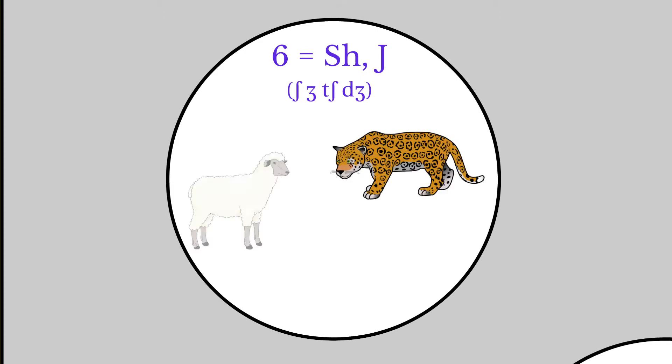Number six is replaced by alveolar fricatives and affricates. These are the sounds sh, zh, ch, and j. Remember, it's not the letters themselves, but the sounds that are important. Here we have a jaguar and a sheep to remember the j and sh sounds specifically.